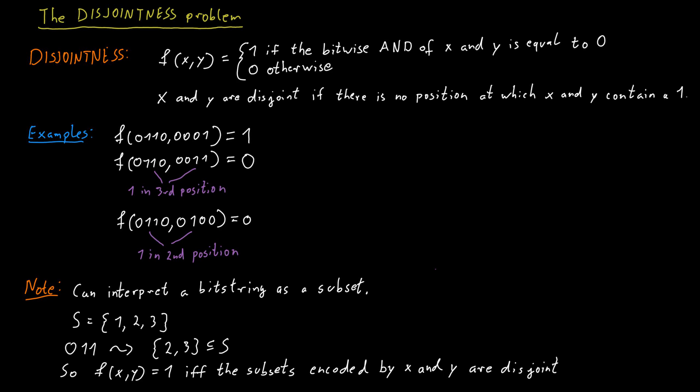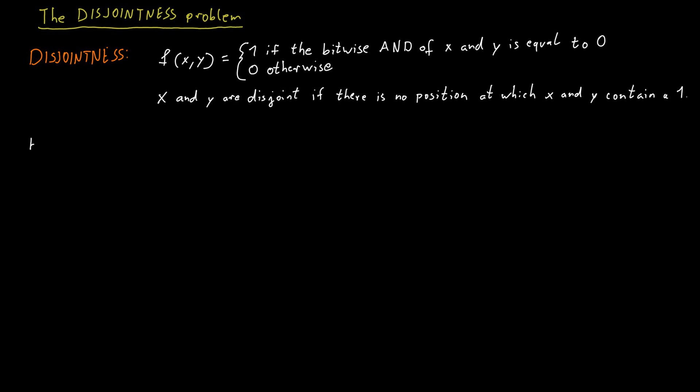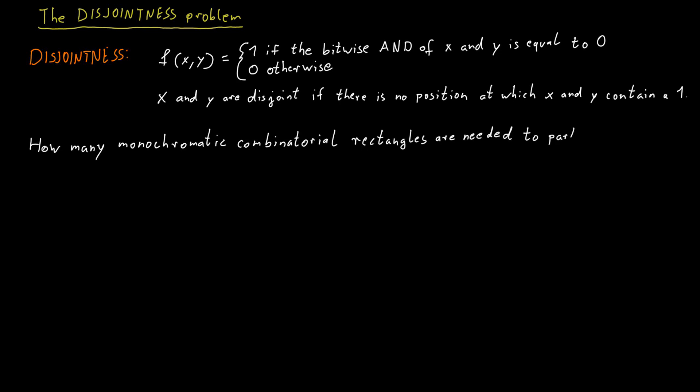We would like to determine what the communication complexity of this disjointness function is. Our thinking about protocol trees and monochromatic combinatorial rectangles is really helpful here. We ask ourselves how many monochromatic combinatorial rectangles we need to partition the matrix that corresponds to this disjointness function.